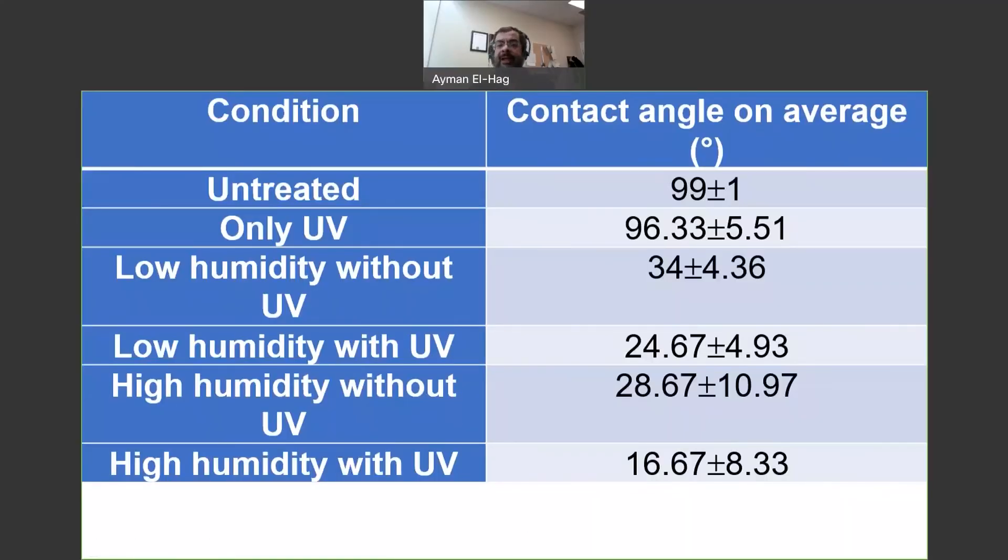Welcome back. Here is some of the results about the contact angle measurement. Now the contact angle will tell you the condition of the surface of the non-ceramic insulator, if it is hydrophobic or if it is hydrophilic. Of course the higher the angle, the better is the material. So this is our reference, the untreated sample. So we have like 99 degree plus minus 1. So it is obviously very, very high.